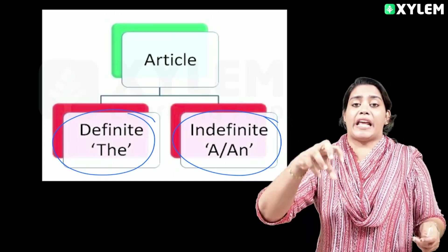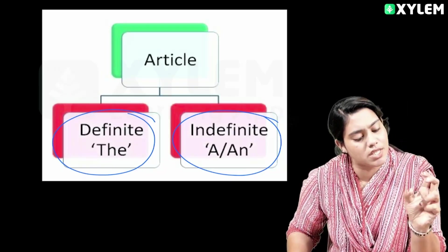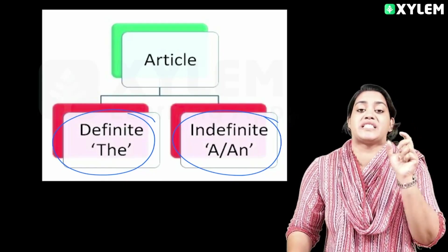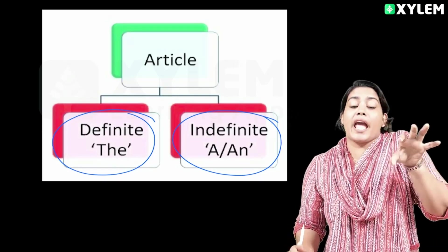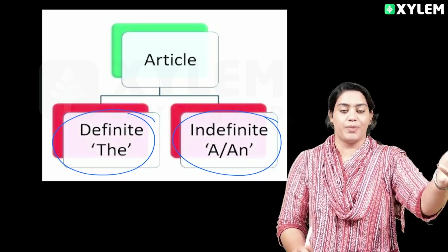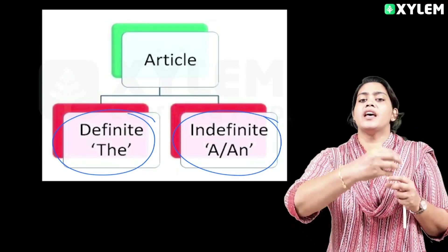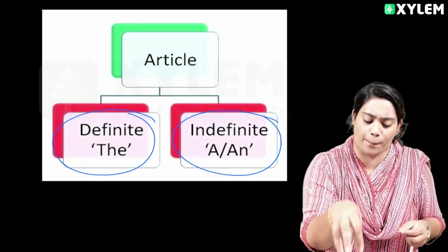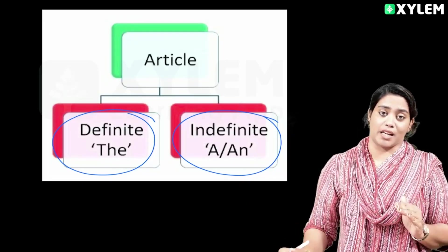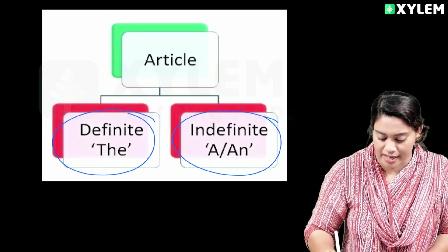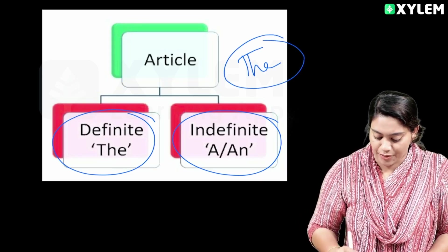Definite and indefinite are basically what they are saying. We are giving a note on a specific, true reference. We are giving a specific article in our statement. The definite article is 'the', and that is the indefinite article 'a' and 'an'.